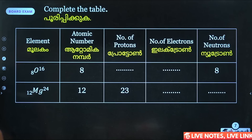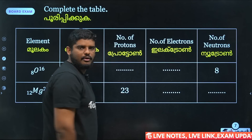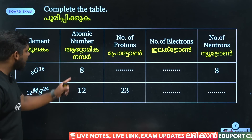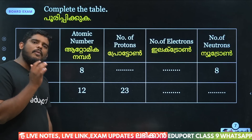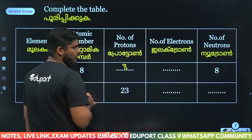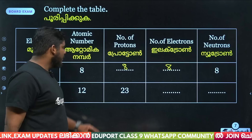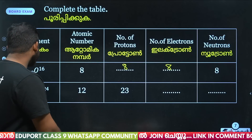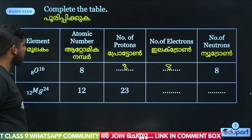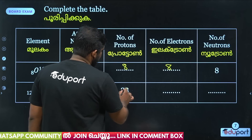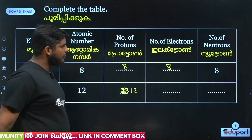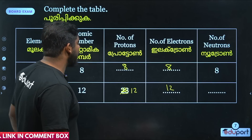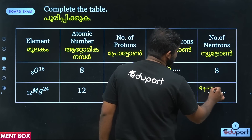Complete the table: atomic number, proton, electron, neutron. The number of protons is 8, and electrons is 8. For magnesium, the atomic number is 12 and mass number is 24. The number of protons is 15, electrons is 15. Neutrons = 24 minus 15.